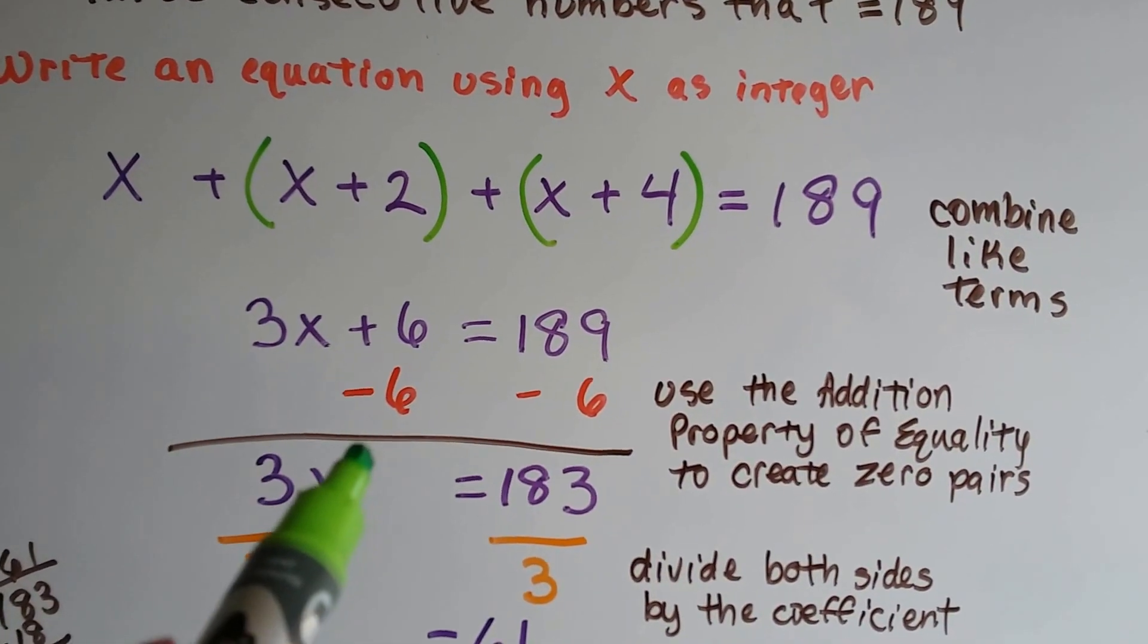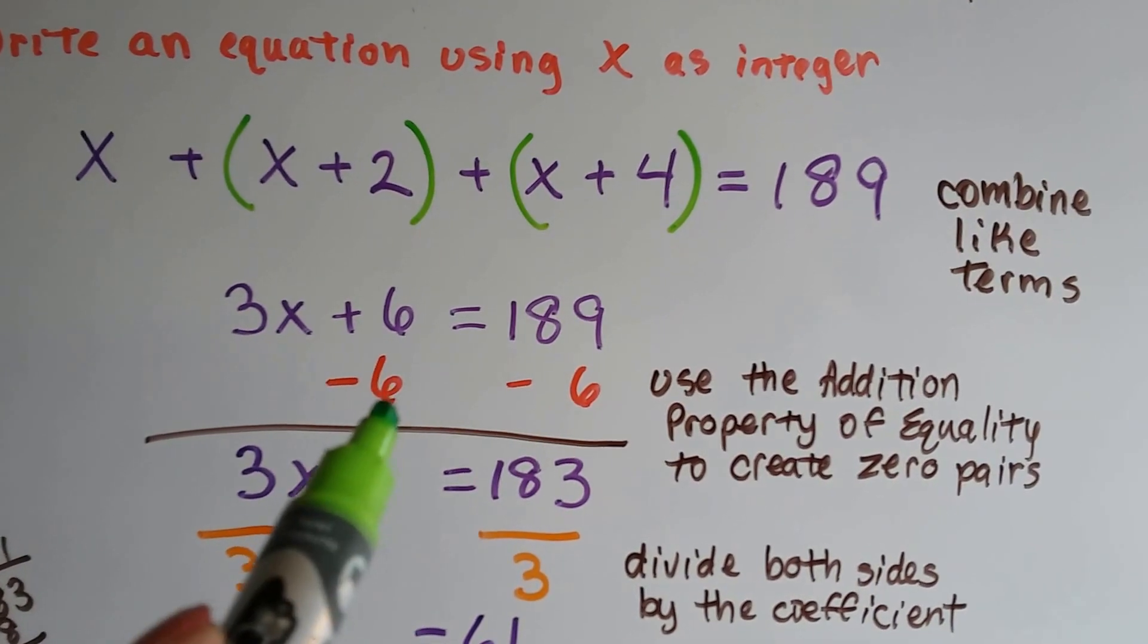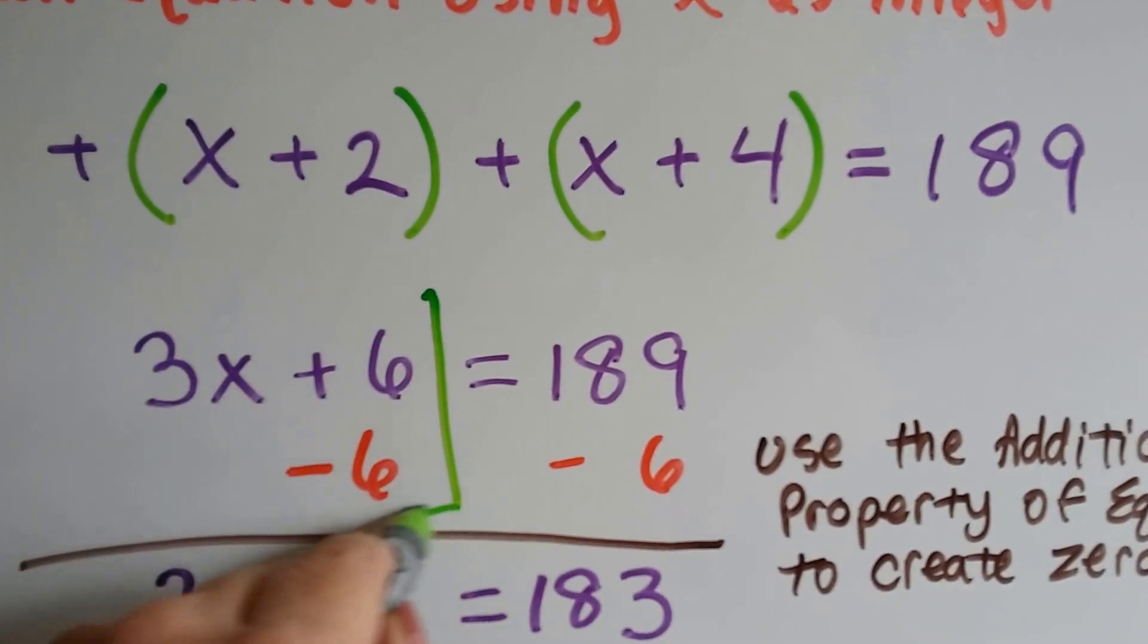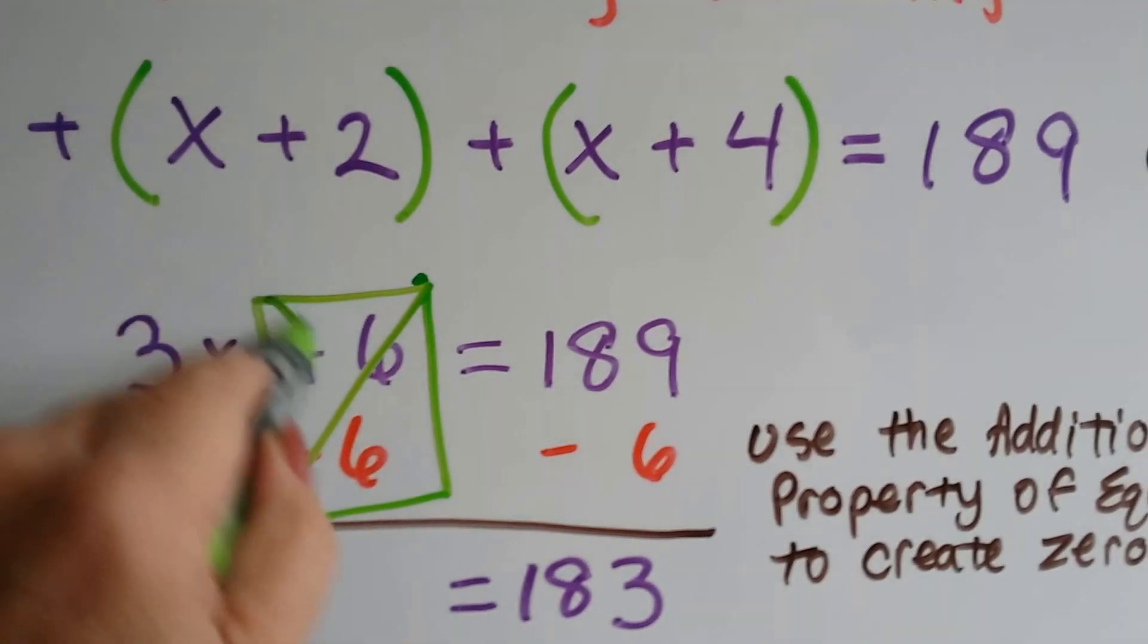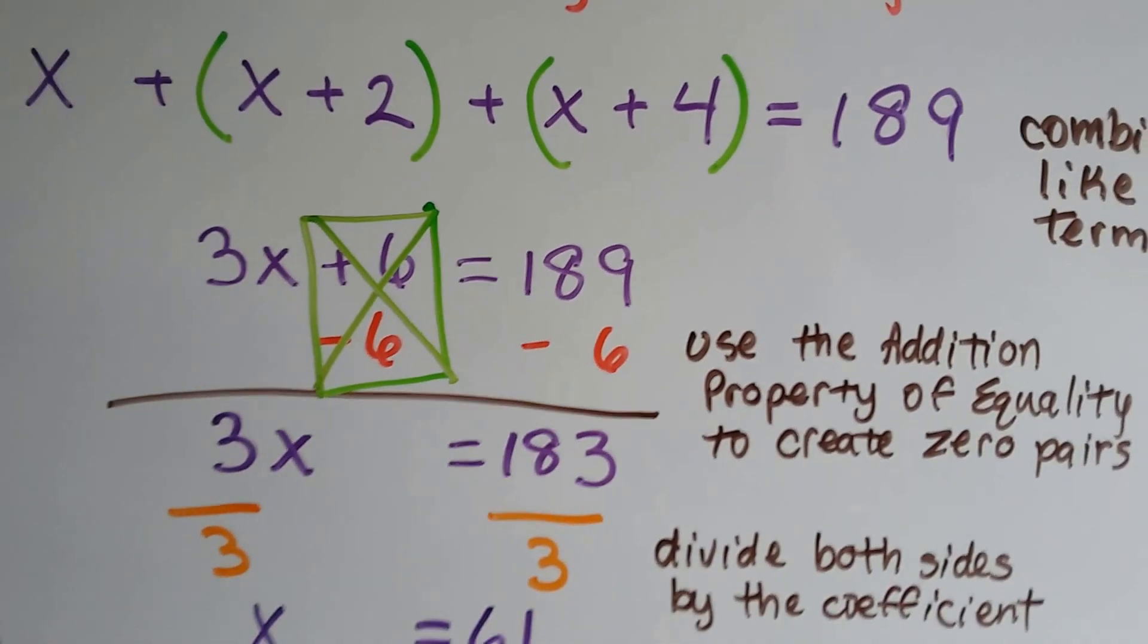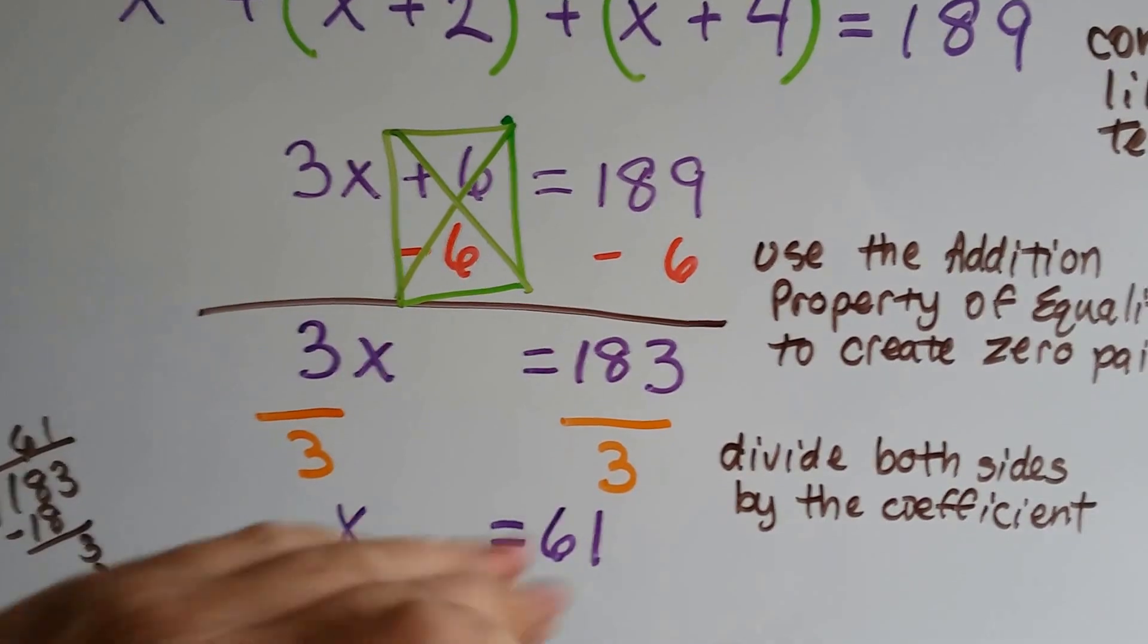Now we can use the addition property of equality to create zero pairs, right? So we can create one here, can't we? And this eliminates this plus 6. And we take 6 away from the 189 and we get 183.